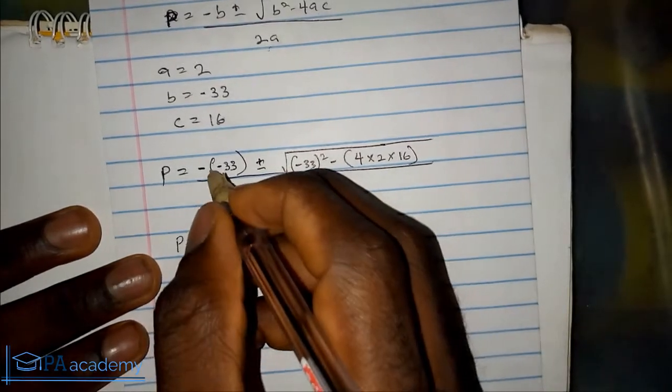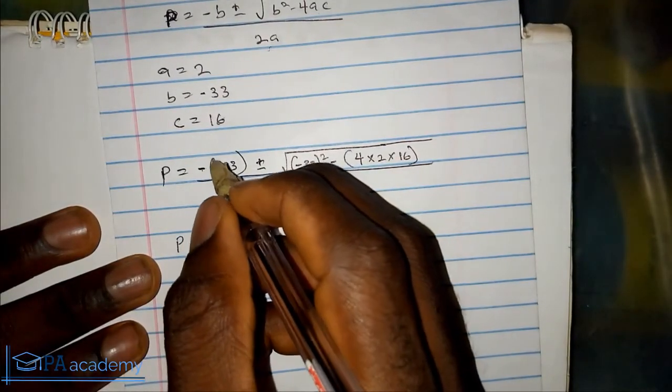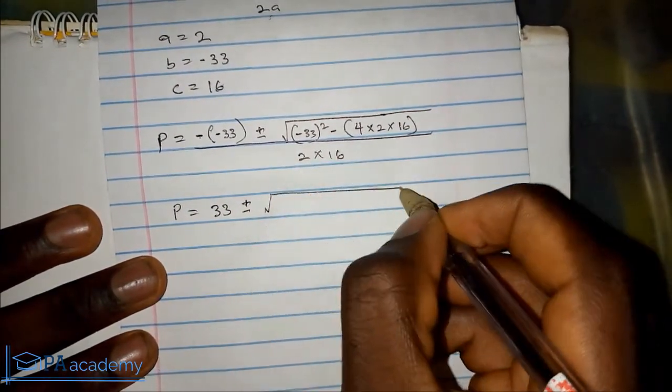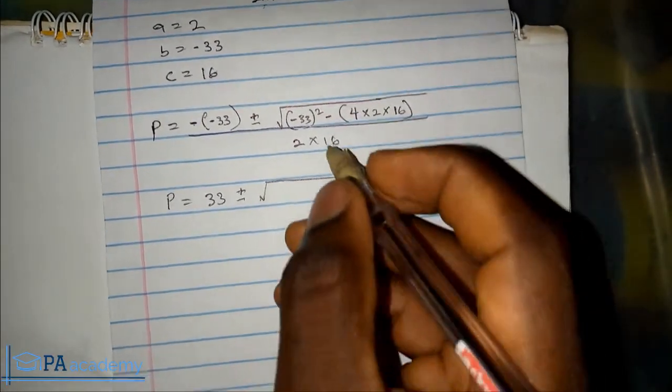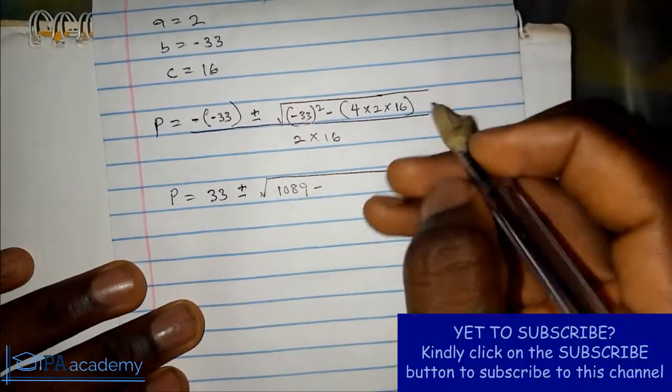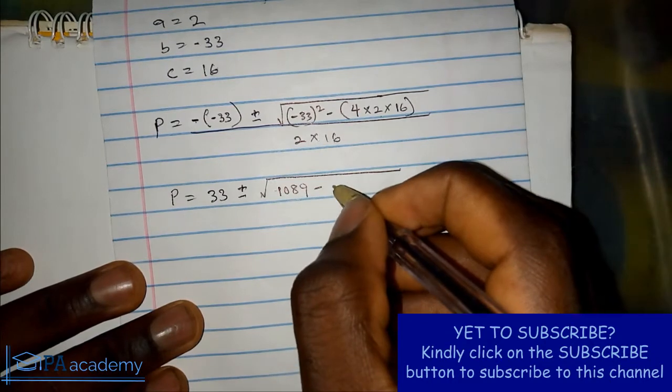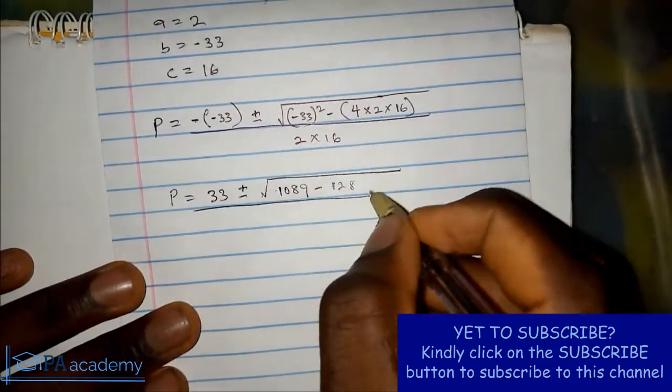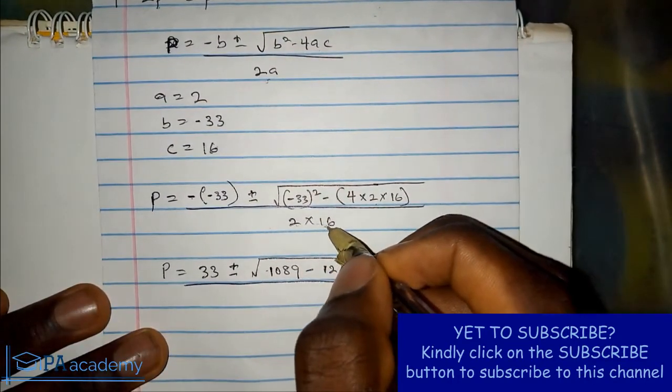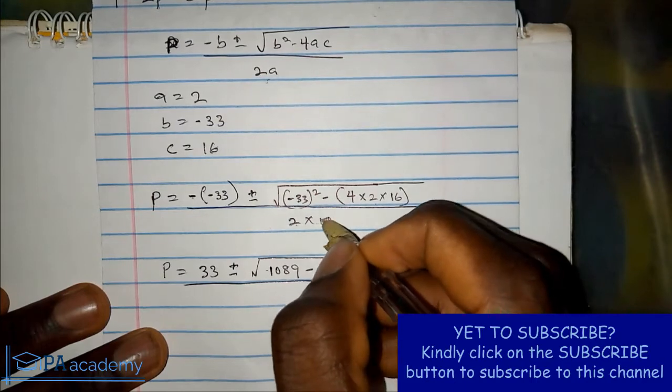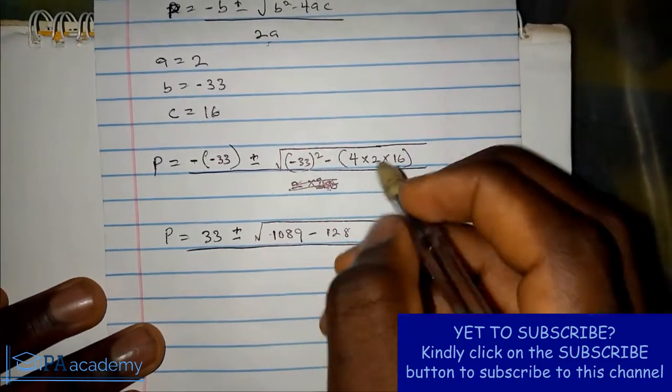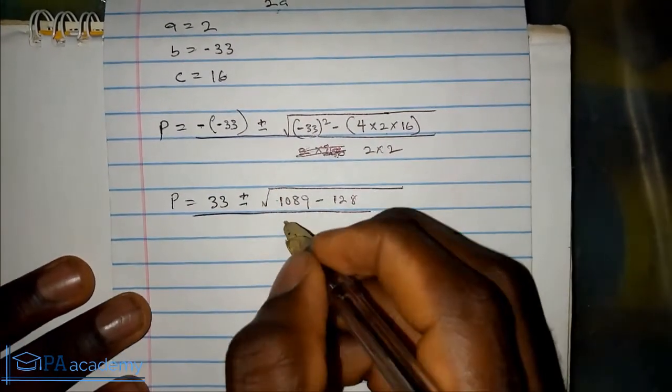Our p equals minus, multiply by minus 33, we have 33, plus or minus square root of, minus 33 squared gives us 1089, minus, 4 times 2 times 16 is 128, over, sorry this is 2a not 2c, so that would be 2 times 2. So that is 4, sorry for that.